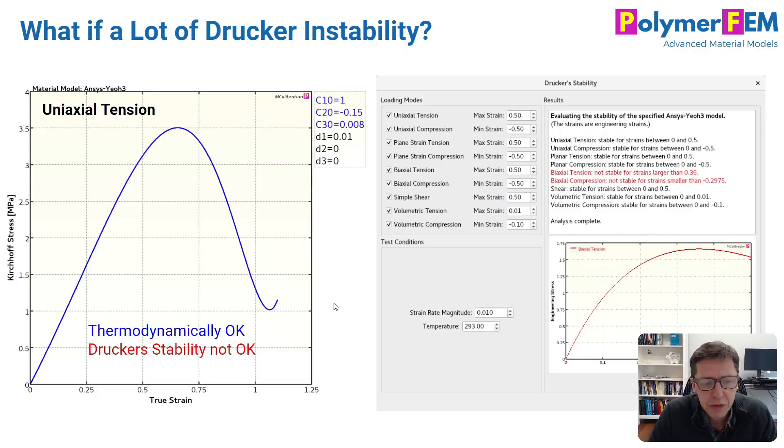So how would we deal with this? Well, the stability condition itself depends not only on the loading mode, but also on the magnitude of the applied deformation. There are cases where a material like the figure to the left is stable at small strains, and then it becomes unstable at larger strains. One way you can explore this is to use the MCalibration Drucker stability check.